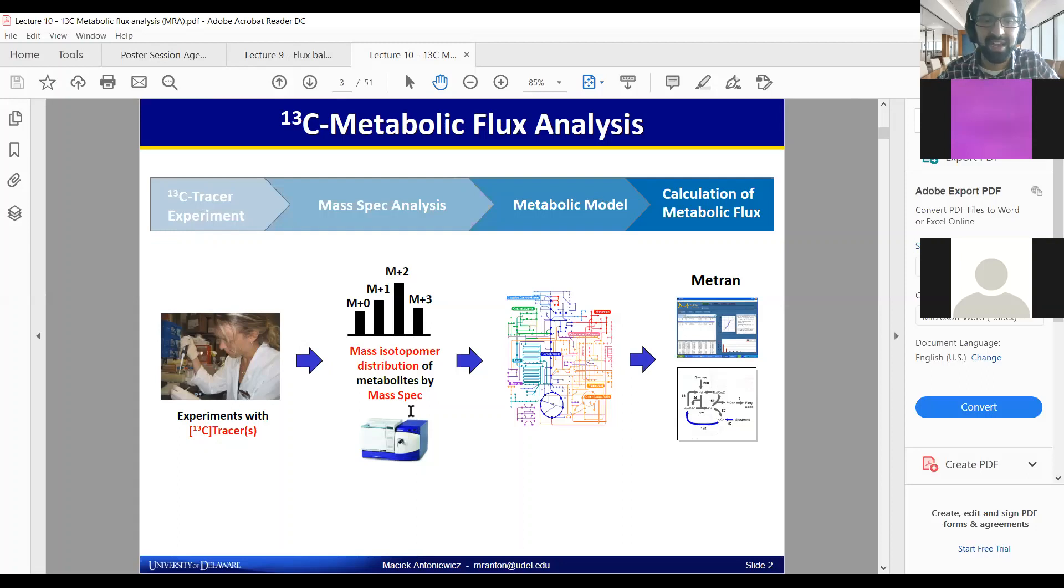Therefore, the compounds that contain 13C can be resolved by a mass spec and would have this different isotopomer distribution. You can impose that information onto your metabolic model and calculate different metabolic fluxes more accurately, more precisely, getting rid of some of the underdeterminants. Professor Antoni's software to do this is called Metran.